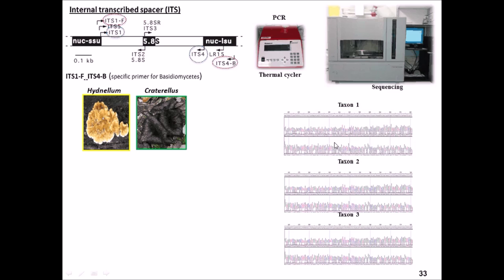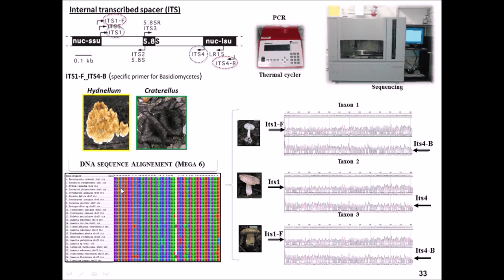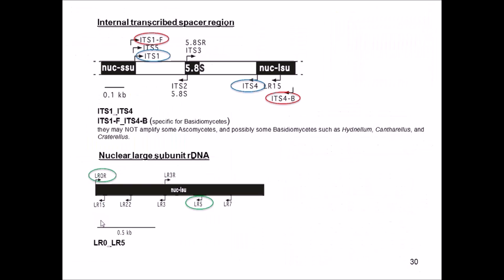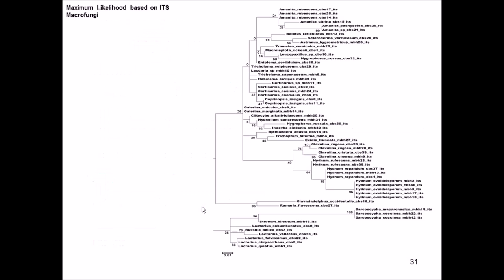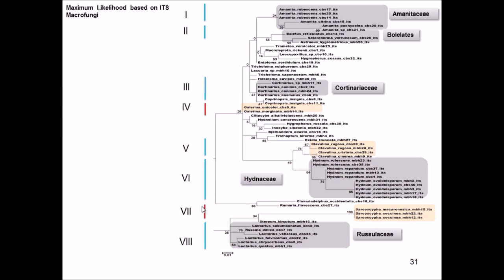After PCR and sequencing, I obtained forward and reverse sequences and performed alignment. Based on the sequences from macro fungi and ectomycorrhizal samples, I constructed phylogenetic trees based on the ITS region. To confirm correct identification, I also used the LSU region with LR0R and LR5 primers. We can see several families of macro fungi related to cork oak: Amanitaceae, Boletaceae, Cortinariaceae, Hydnaceae, and Russulaceae.